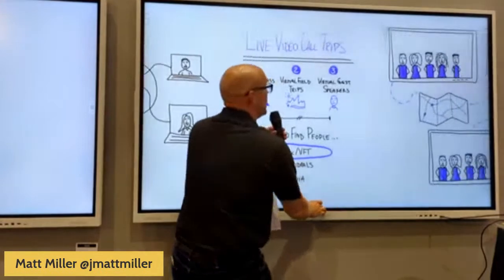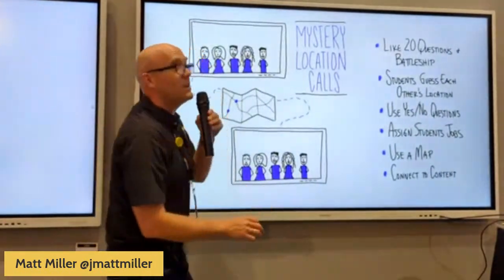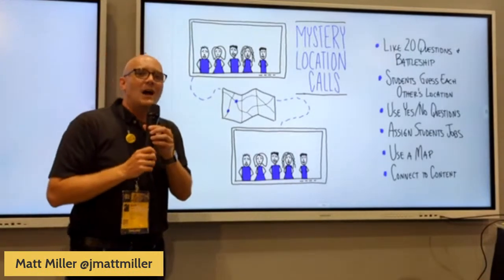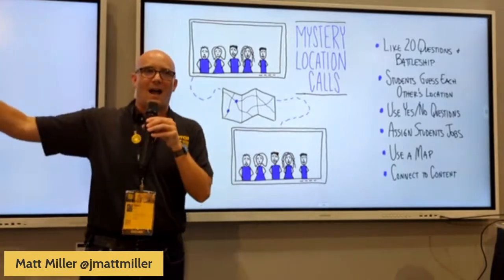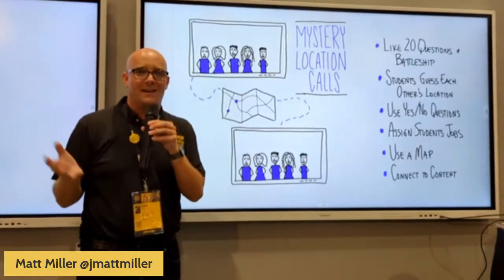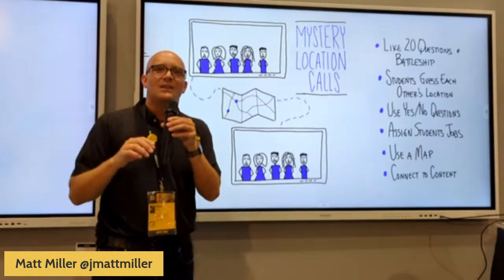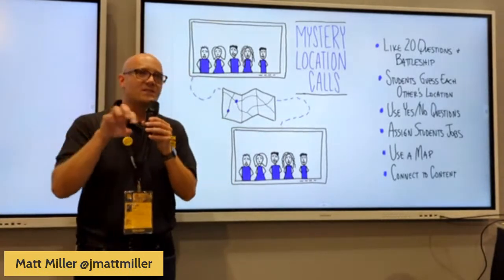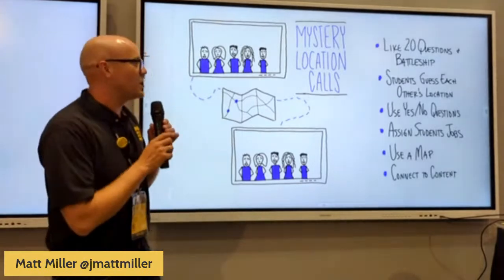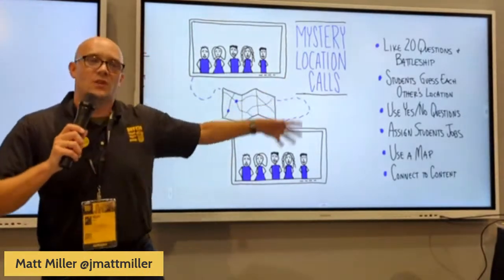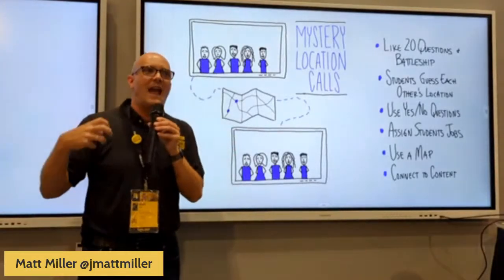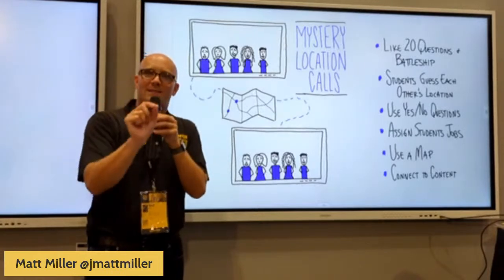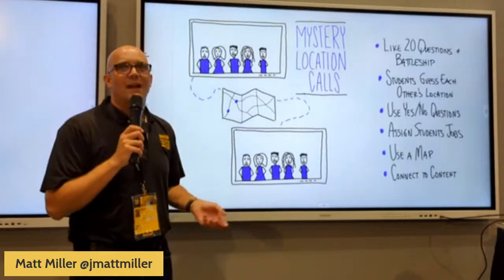Mystery location calls are a fun way to use video conferencing. The basic idea is you get your class on a video call with another class and neither class has any idea where the other one is located — that's what they have to figure out. They ask yes-and-no questions back and forth to guess each other's geographic location. It's super fun. I've had my high school Spanish students do it with states all over the US and a couple of different countries. I'd have my students ask questions in the target language, and they can narrow down what state the other class is in on a map.